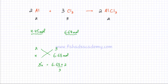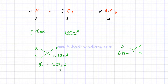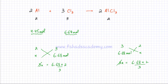Similarly, we can also find out the amount of AlCl₃ that would be produced. I can pick any ratio — let's pick chlorine with AlCl₃. The ratio of chlorine to AlCl₃ is 3:2. So if I have 6.68 moles of chlorine, the amount of AlCl₃ produced would be x. Cross-multiplying gives 3x = 6.68 × 2. Dividing by 3 gives the same answer: 4.45 moles of AlCl₃.